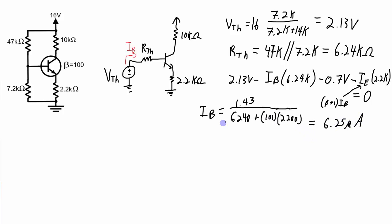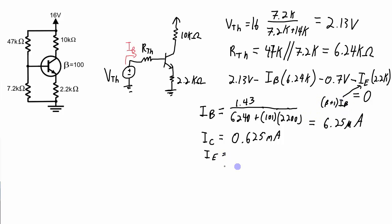IB works out to 6.25 microamps. Since IC is beta times IB, I can easily figure out my collector current, which works out to 0.625 milliamps. I can also easily figure out my emitter current from that equation, and that works out to 0.632 milliamps.